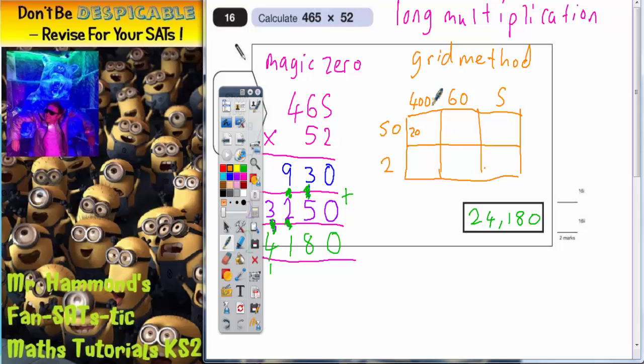And then we've got 1, 2, 3 zeros to put on the end. This box is 50 times 60. 5 60s are 30. And then we've got 1, 2 extra zeros. So that makes 3,000. And this box is 5 times 50. Well 5 times 5 is 25. And then we've got 1 extra zero here, which goes on the end there.